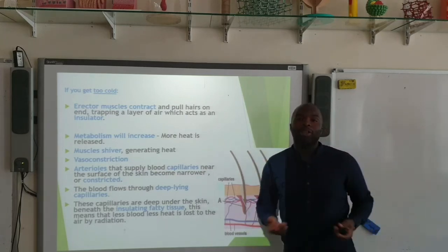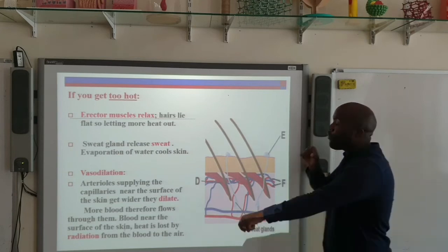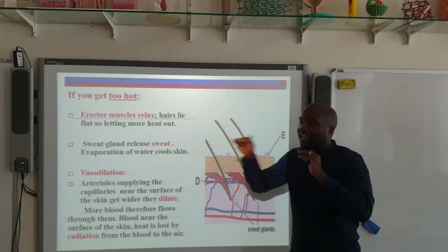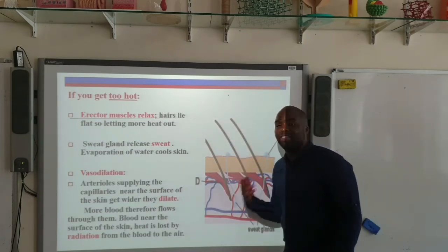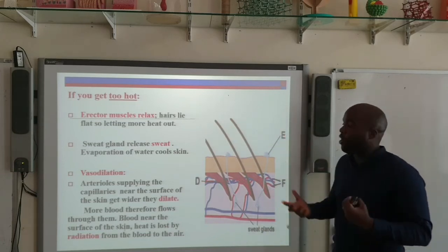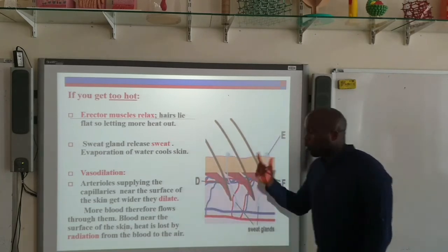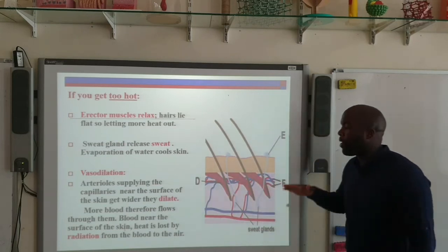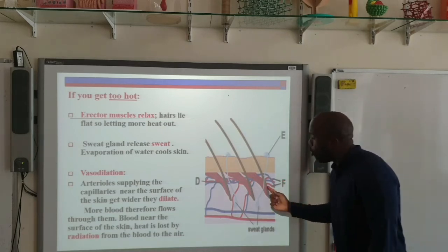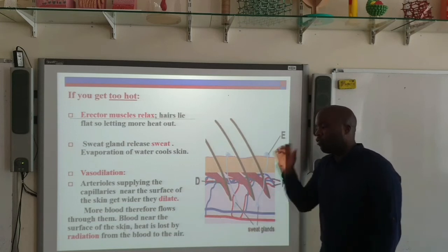Now let's look at the opposite — you've walked out of your favourite mall, your car is parked ten minutes away, it's the height of summer, and it's too hot. The erector muscles connected to the hairs will relax, causing the hairs to lie flat and releasing the insulating layer of air. The sweat glands will release sweat, and as the water from the sweat evaporates, this cools the skin down, because evaporation requires energy. The opposite process is vasodilation — the arterioles supplying the capillaries near the surface of the skin will get wider; they dilate. When they dilate, more blood flows closer to the surface of the skin, so more heat can be lost from the blood via radiation to the air.